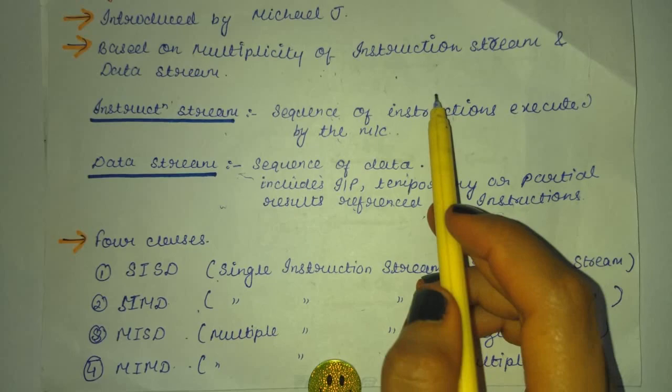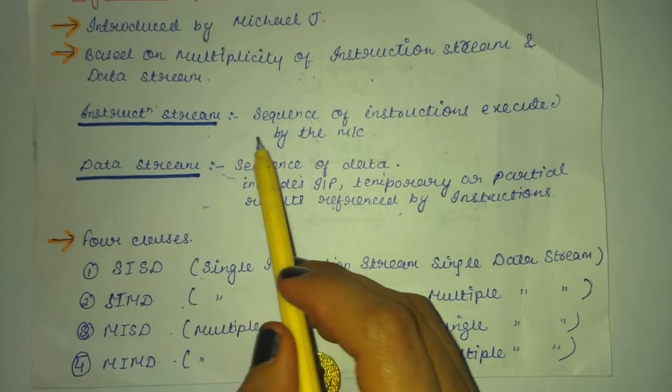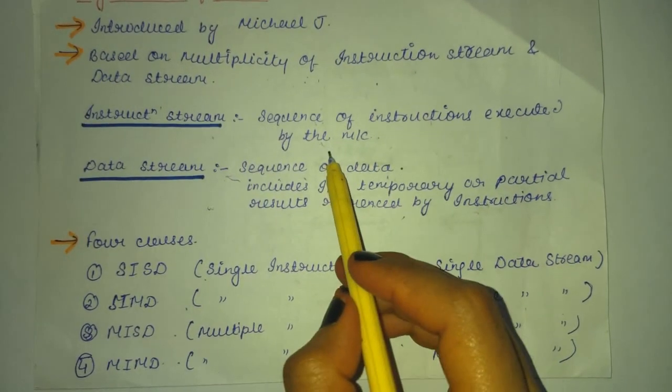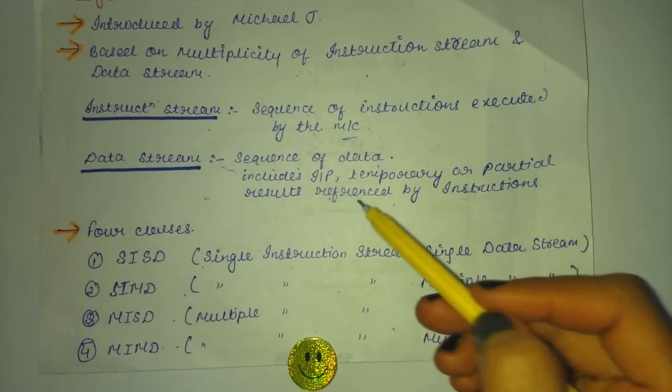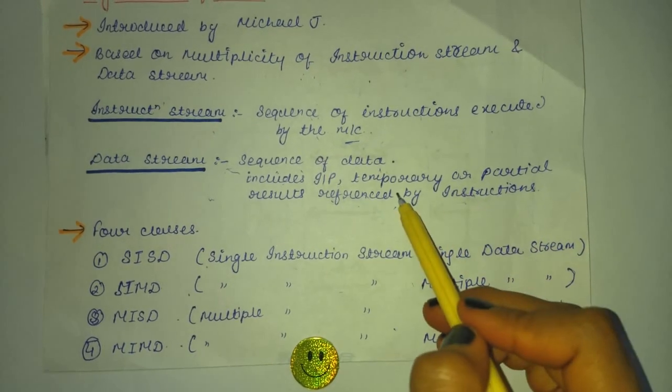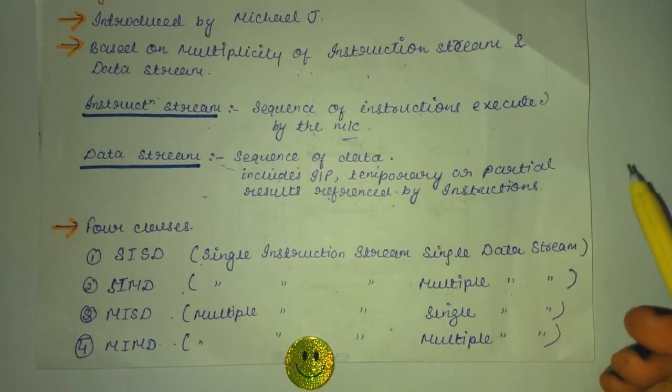What do they mean? Instruction stream is the sequence of instructions executed by the machine. Data stream is a sequence of data. It includes input, temporary or partial results referenced by the instruction.